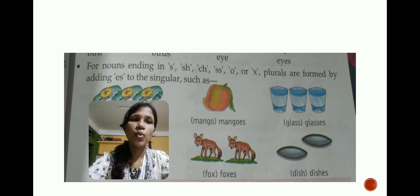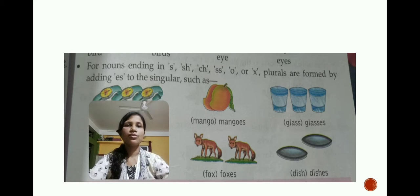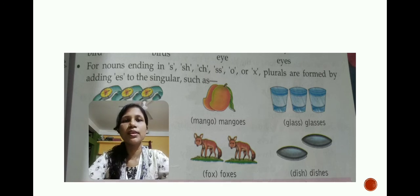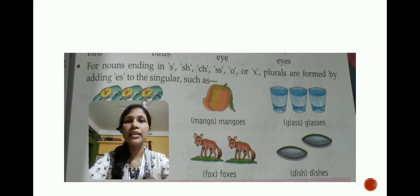The next one is 'dish' — it ends in 'SH,' so it becomes 'dishes.' I hope students that these rules of plurals are clear to you — making plurals by adding 'S' or by adding 'ES' to the singular words.